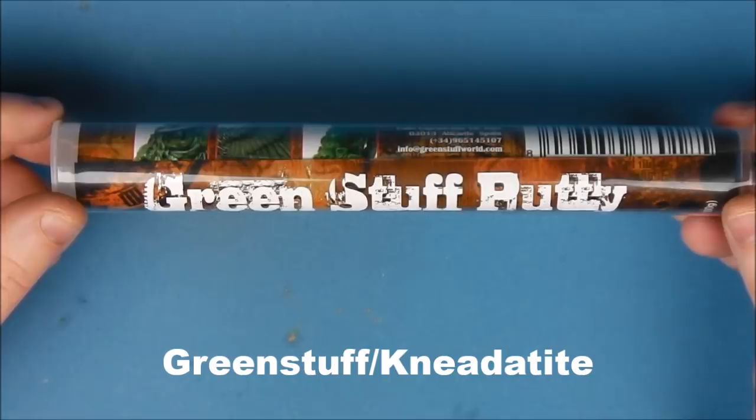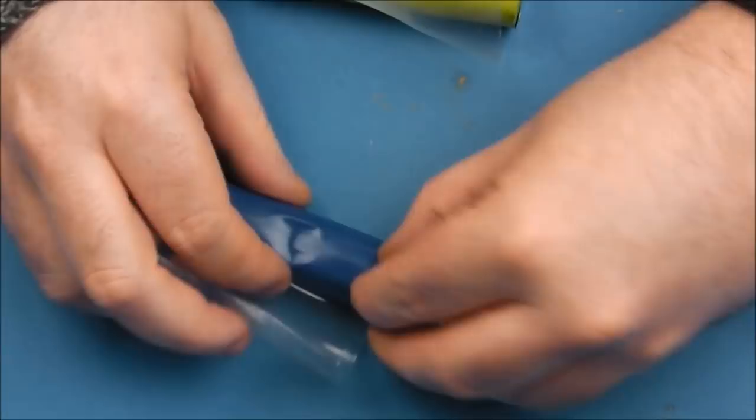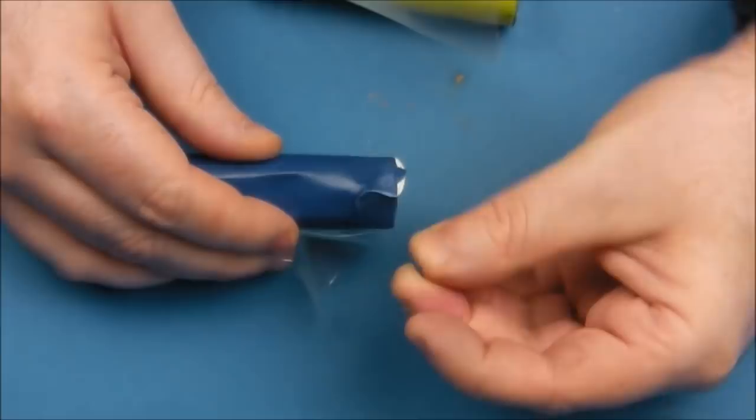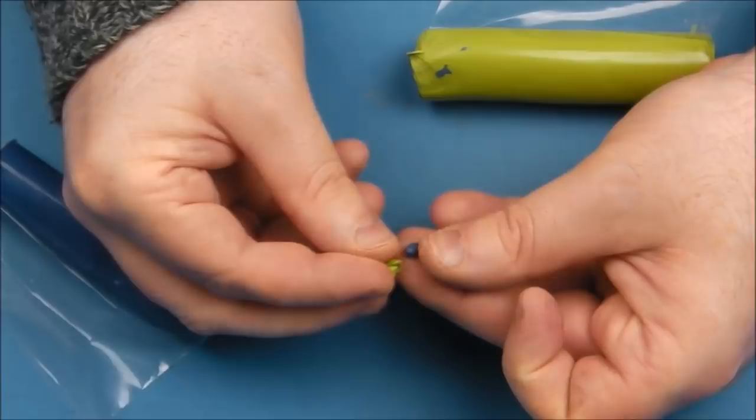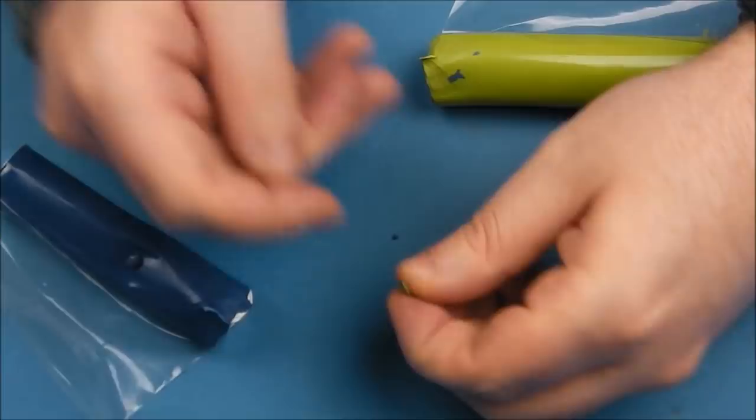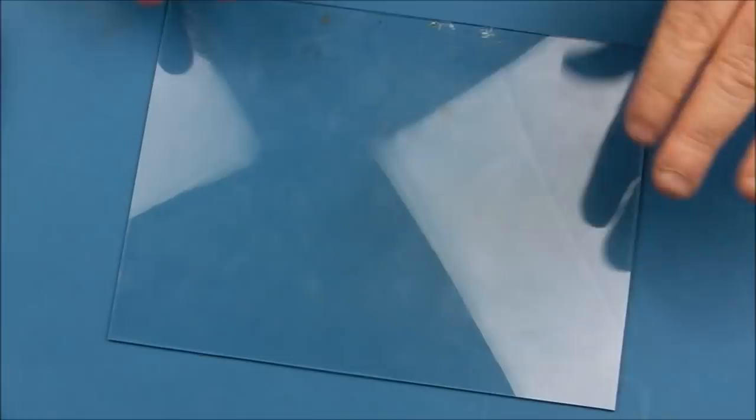For that we're going to do a bit of very simple sculpting with green stuff. This is a two-part epoxy putty and we're going to take the A and B of the two putties and mix them in equal measure. We don't need too much, we're just going to be making the actual badges themselves. I'm pulling off a tiny amount, 50-50 or as close to as possible. I'm just going to mix it until I get an even green color.